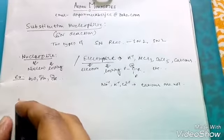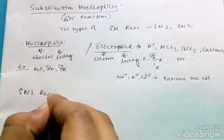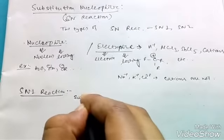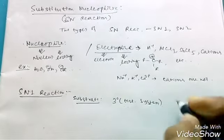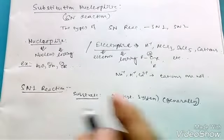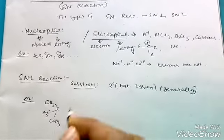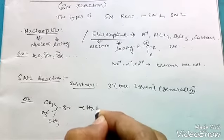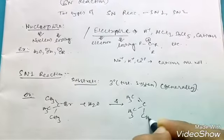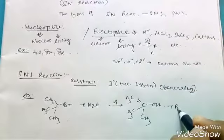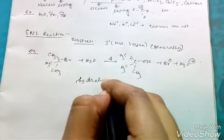Now shift to our main focus: SN1 reaction. Substrate is tertiary, 3 degree tertiary system. Generally, an example is tertiary butyl bromide plus water, heat is applied, and you get product tertiary butyl alcohol plus HBr, plus H3O+. It is nothing but hydrolysis.